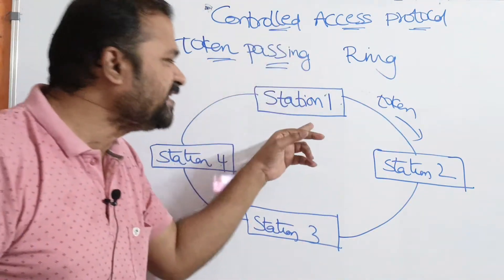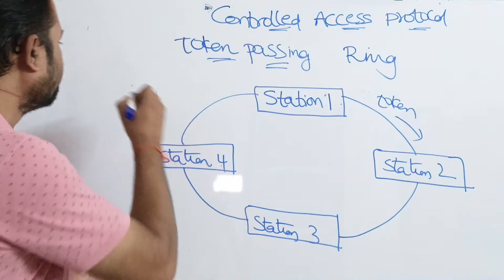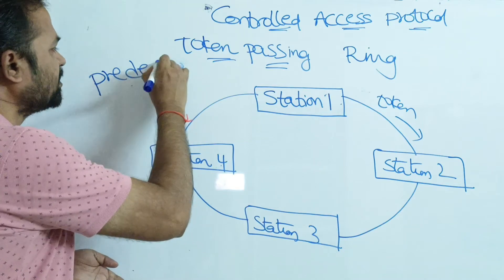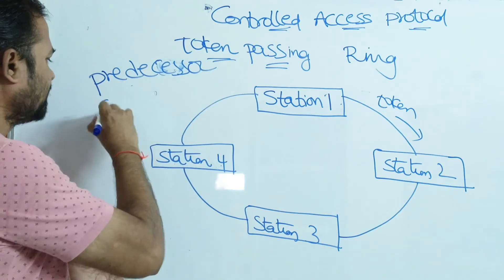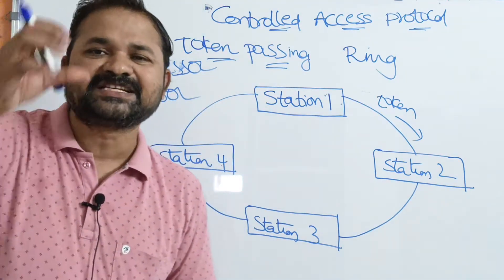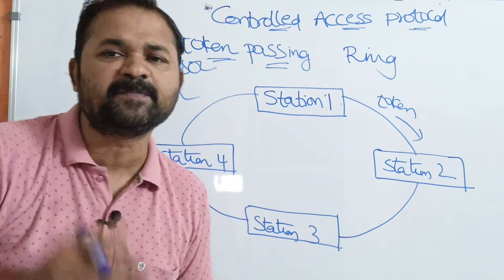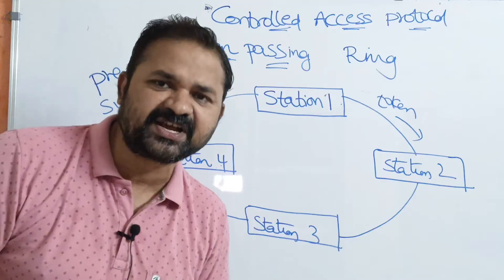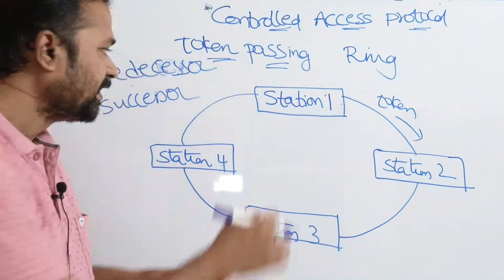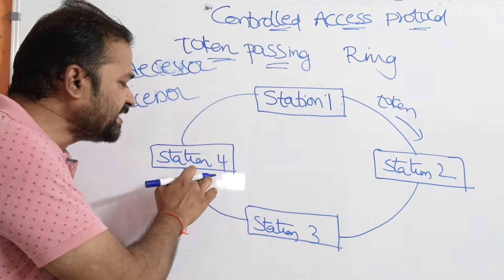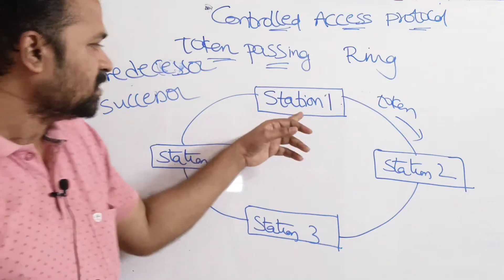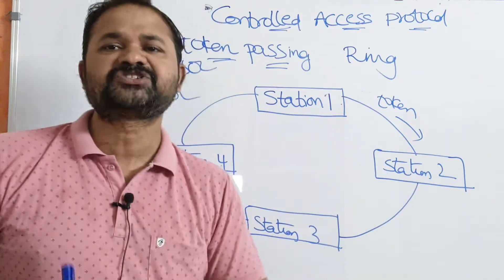For every station, there will be a predecessor station as well as a successor station. Predecessor station means the station which is present before a particular station, and successor station means the station which is present after a particular station. If we consider station 1, the predecessor station is station 4, because before station 1 we have station 4. The successor station of station 1 is station 2.